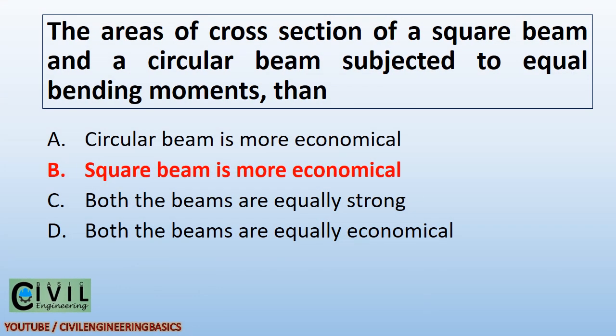A diagram which shows the variations of the axial load for all sections of the span of a beam is called a Thrust Diagram. A square beam and a circular beam subjected to equal bending moments, then square beam is more economical.